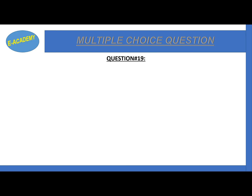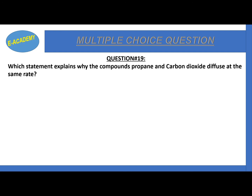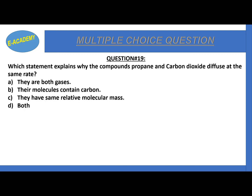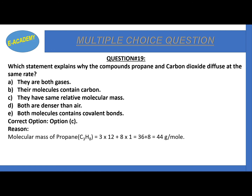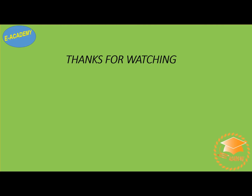Question number 19: which statement explains why propane and carbon dioxide diffuse at the same rate? They are both gases, their molecules contain carbon, they have the same relative molecular mass, or both are denser than air? The correct option is C - they have the same relative molecular mass. The molar mass of propane C3H8 is 44 g/mol, and the molar mass of carbon dioxide CO2 is also 44 g/mol. That's all about MCQs of Chapter 4 - Gases.